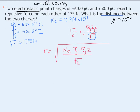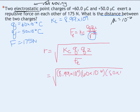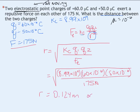Now that we have our equation, we can plug in the numbers. Kc is 8.99 times 10 to the 9th. Q1 is 60 times 10 to the negative 6th, and Q2 is 50 times 10 to the negative 6th. Our electric force is 175 newtons. Plugging that all into our calculator, we find that the radius equals 0.124 meters, or 12.4 centimeters, which is the distance between the two charges.